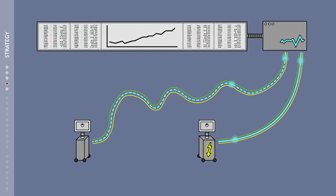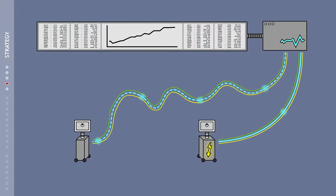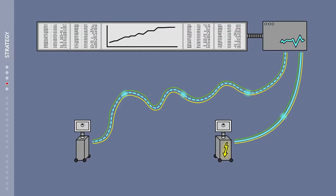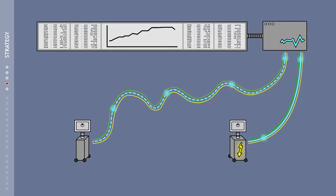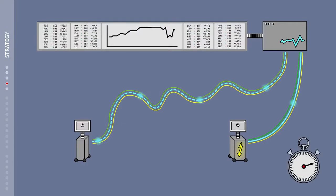To make this work, the high-frequency trading programs must always be a split second faster than the others. And that's only possible when they are close to the stock market. The shorter the cable, the faster the information can be transmitted. It's all about milliseconds.